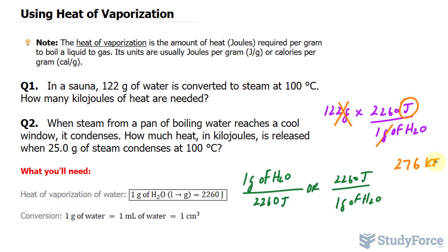In question number 2, when steam from a pan of boiling water reaches a cool window, it condenses. How much heat in kilojoules is released when 25.0 grams of steam condenses at 100 degrees Celsius?